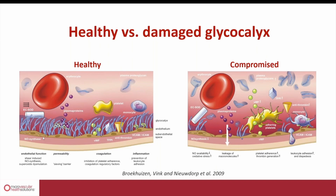We also realized that binding of important enzymes like superoxide dismutase to the polysaccharides of the glycocalyx is essential to capture the oxygen radicals that are locally produced, to prevent these oxygen radicals from doing damage to your blood vessels.